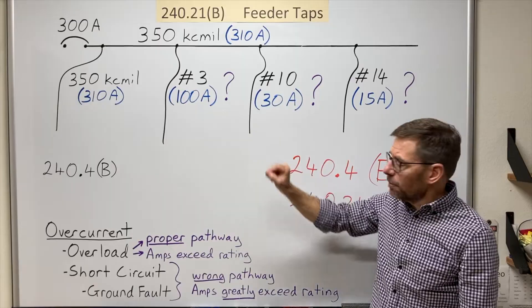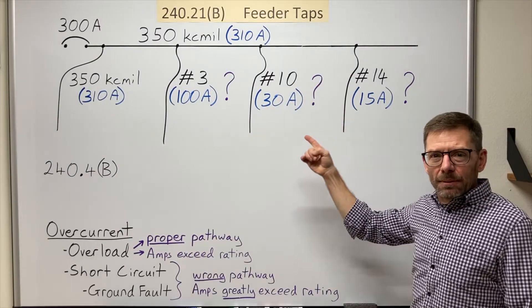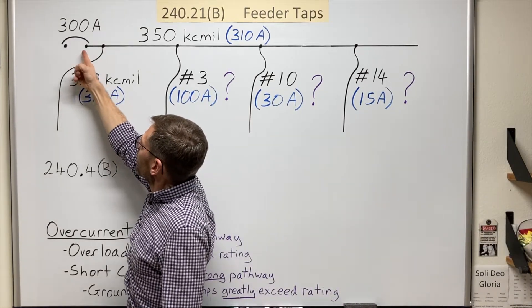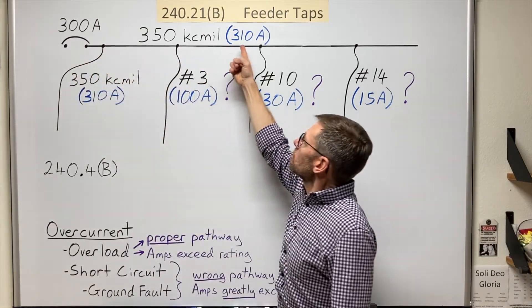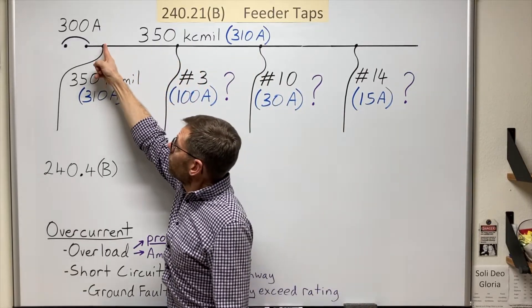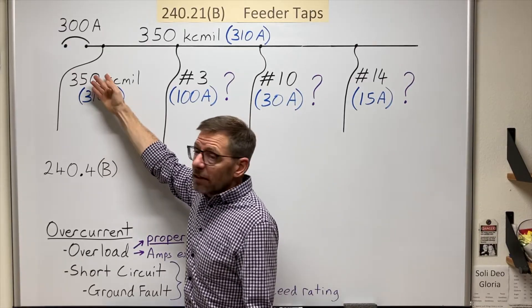We'll see how that plays into the protection here. So which of these conductors would be tap conductors? I've got a 300 amp breaker feeding a wire that's good to 310 amps. That's good. Another wire spliced in here, also good to 310. That's good. Well protected.